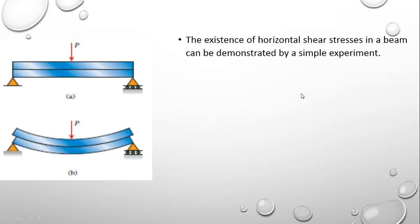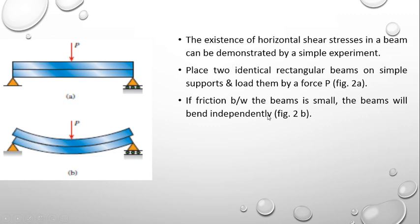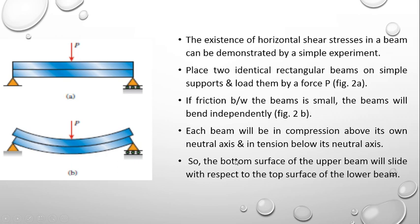The existence of horizontal shear stresses in a beam can be demonstrated by a simple experiment. Place two identical rectangular beams on simple supports and load them by a force P. If friction between the beams is small, the beams will bend independently. Each beam will be in compression above its own neutral axis and in tension below its neutral axis. As a result, the bottom surface of the upper beam will try to slide with respect to the top surface of the lower beam.